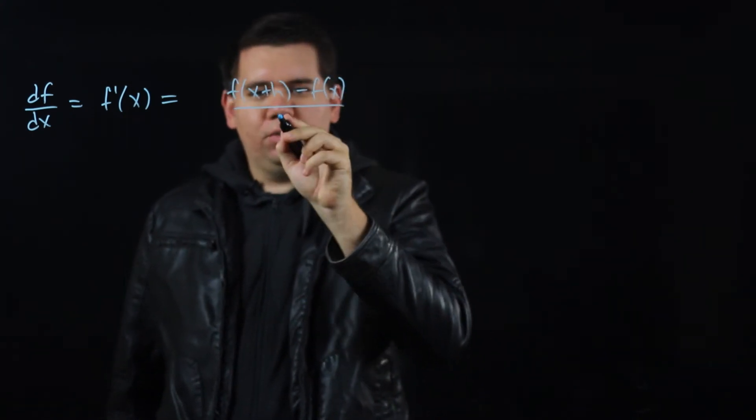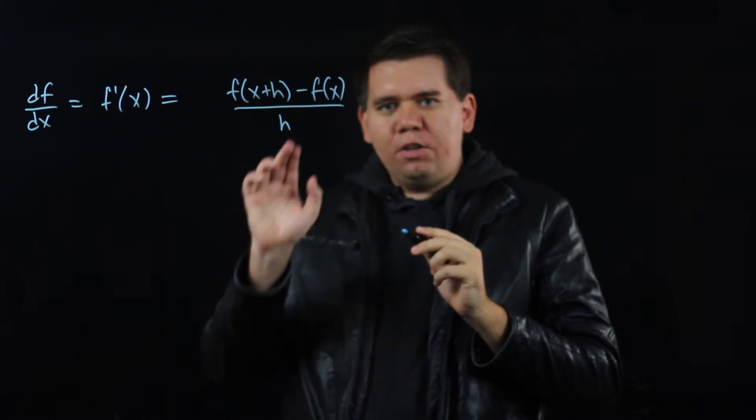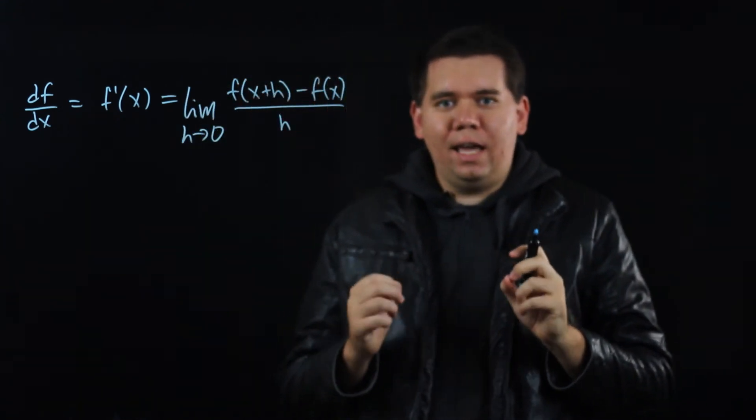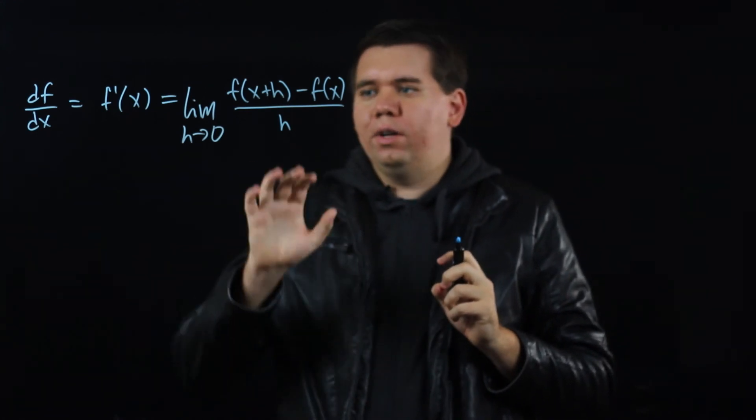x plus h minus x would just be h, and then you take the limit of that as h goes to 0 to give you the instantaneous rate of change of your function.